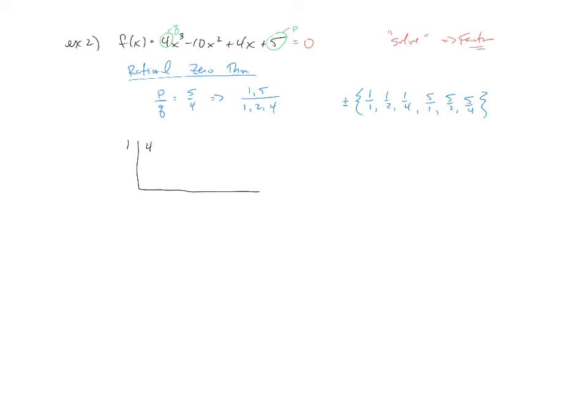we'll take our coefficients here of 4, negative 10, 4, and 5. Bring down the 4, multiply and add. Multiply and add. Multiply and add. And since this number is non-zero, we can see that x equals 1 is not a zero of the polynomial.